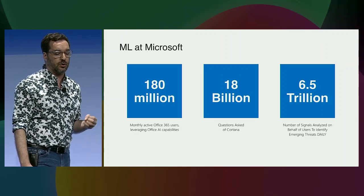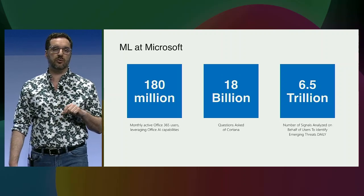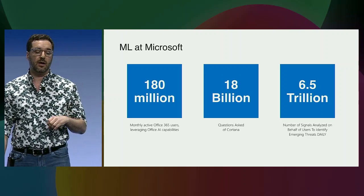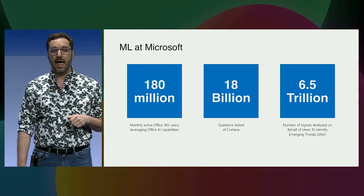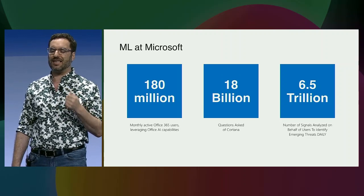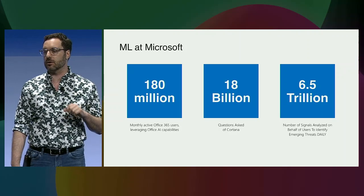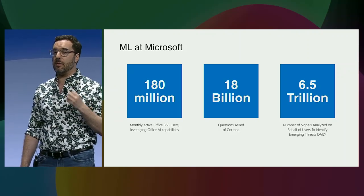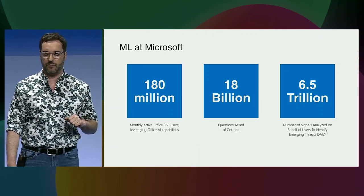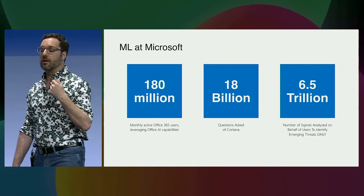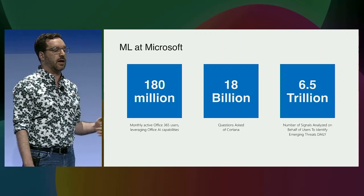We also use this internally. Over 180 million users use Office AI features today. On Cortana, we get 18 billion queries, and we analyze over 6.5 trillion security events every day on behalf of our users. The reality is that ML at Microsoft is what makes this possible. We could not process this volume of data if we did not have the advancements around machine learning and its performance and other characteristics.